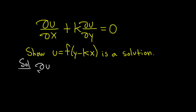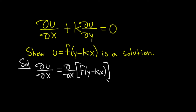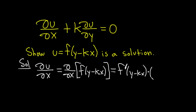Let's start by computing del u del x — the partial of f of y minus kx with respect to x. We use the chain rule: take the derivative of the outside, which is f prime of y minus kx, leave the inside alone, then multiply by the derivative of the inside with respect to x. The derivative of y is 0 and the derivative of negative kx is negative k, so del u del x equals f prime of y minus kx times negative k.